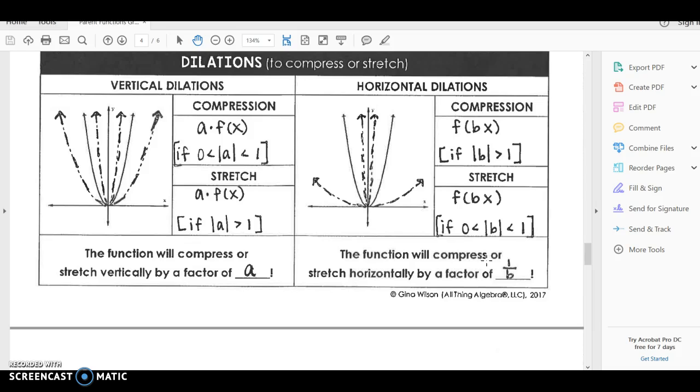Anyways, here if you look, we're going to talk about an a, and a is just an arbitrary number. Remember, if a is in front of your f(x), or if the number's in front of your f(x), we are going to classify that as a in this example. If a is between zero and one, which means it's a fraction, then it is a compression. And if a is greater than one, then it's going to be a stretch.